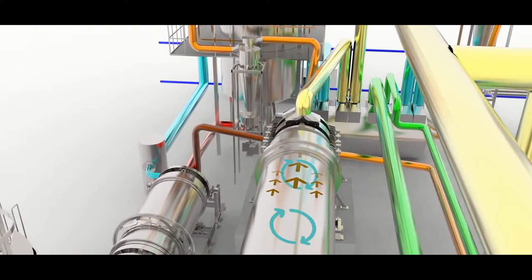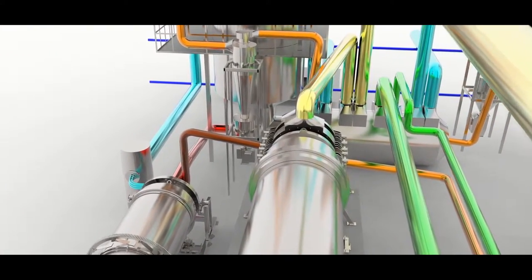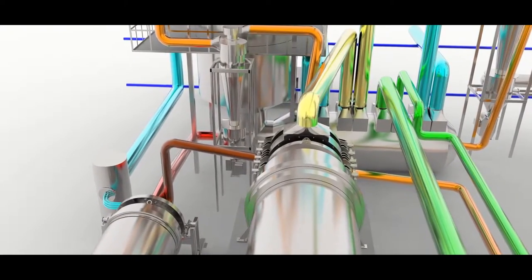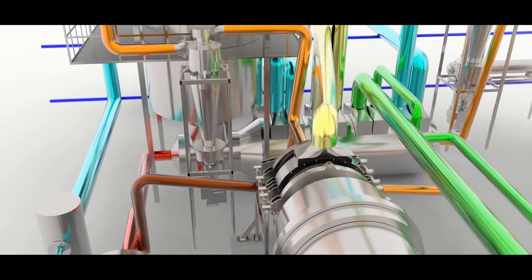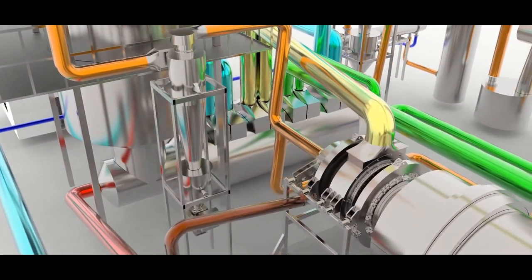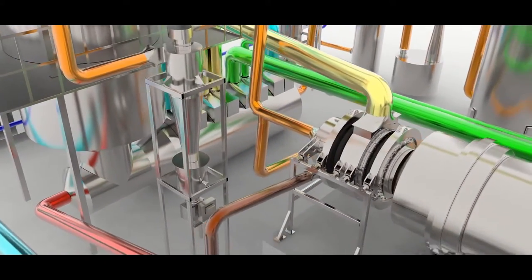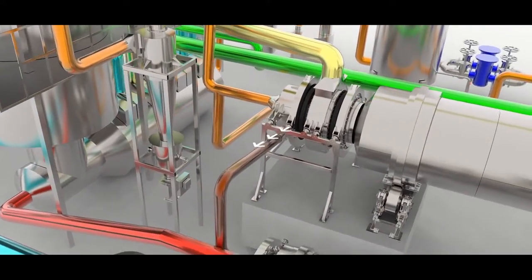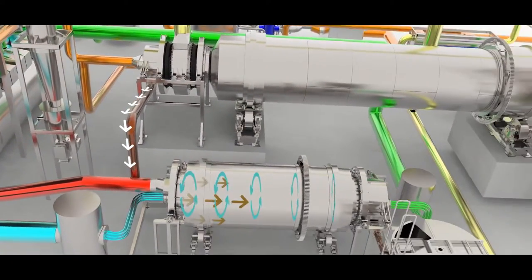After pyrolysis, the solid fraction called char then passes to the gasification reactor, where both the partial combustion of the carbon and the own gasification reactions produce a combustible syngas based on carbon monoxide, hydrogen and methane, which eventually feed the cogeneration engine.